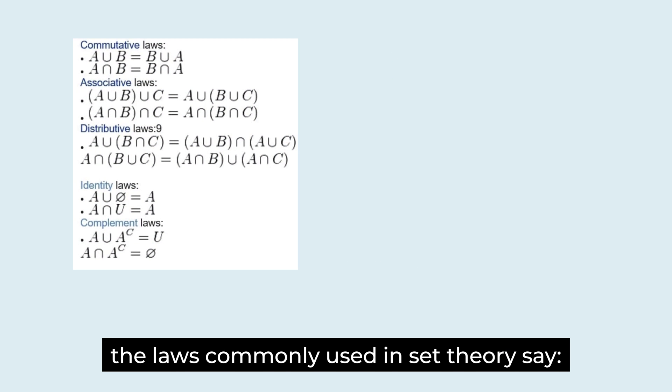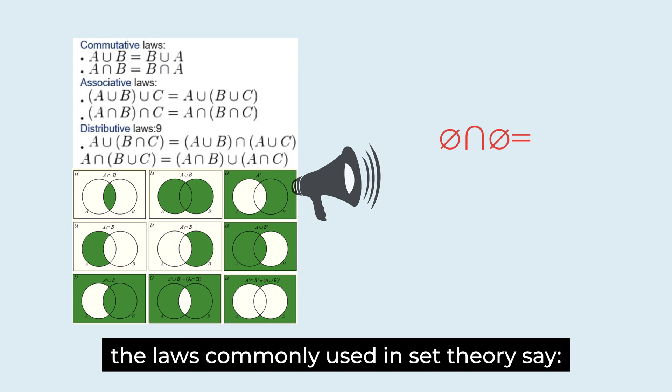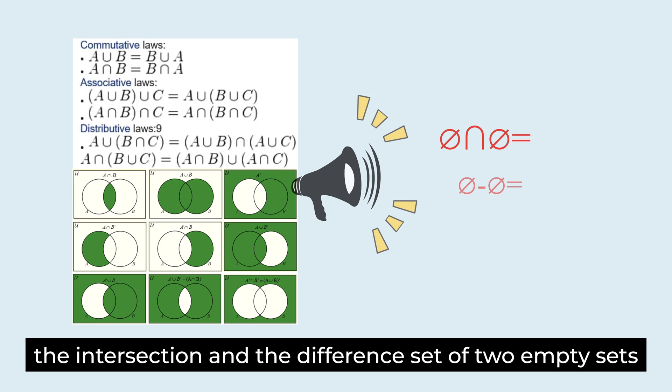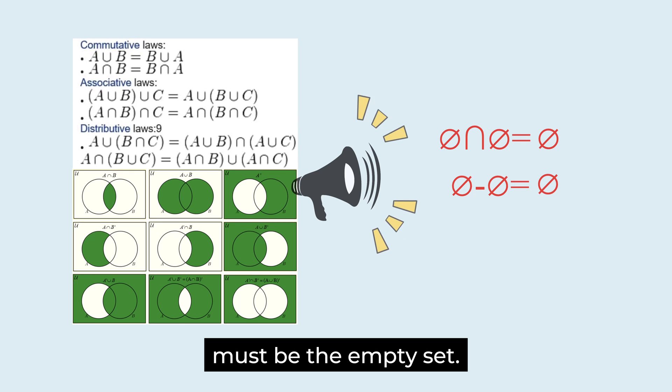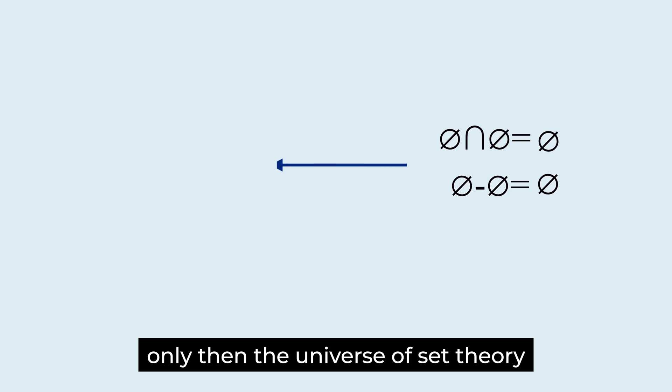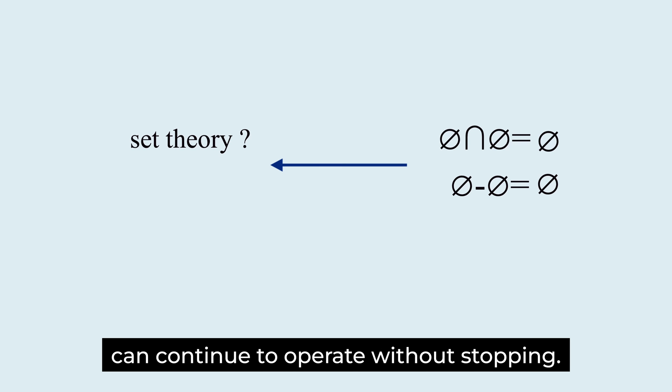The laws commonly used in set theory say, the intersection and the difference set of two empty sets must be the empty set. Only then, the universe of set theory can continue to operate without stopping.